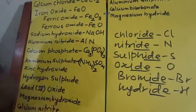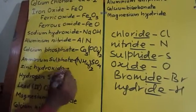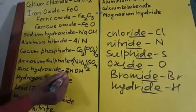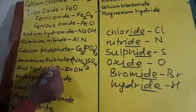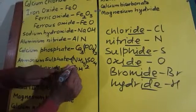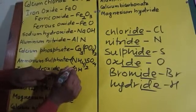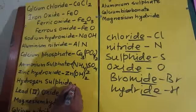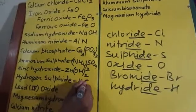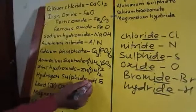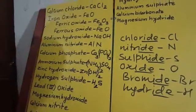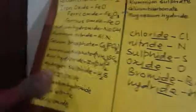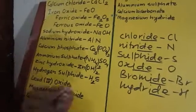Zinc hydroxide: zinc symbol Zn, valency 2; hydroxide has valency 1. We don't transfer the 1; zinc's valency 2 is given to hydroxide. Since hydroxide is a radical, we put it in brackets: Zn(OH)₂. Hydrogen sulfide: hydrogen has valency 1, sulfide means sulfur is combined with valency 2. So we get H₂S.